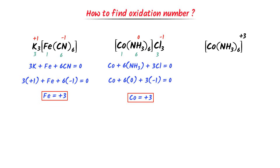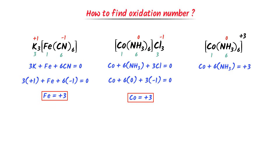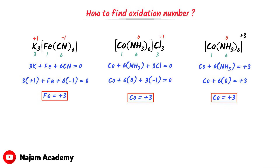Finally, consider [Co(NH3)6]3+. There is one cobalt atom and six NH3 molecules. The total charge on this complex is +3, so: Co + 6(NH3) = +3. Since NH3 has zero charge: Co + 6(0) = +3, giving Co = +3. The oxidation state of cobalt is +3. Using this technique, we can easily find the coordination number and oxidation state of any complex compound.